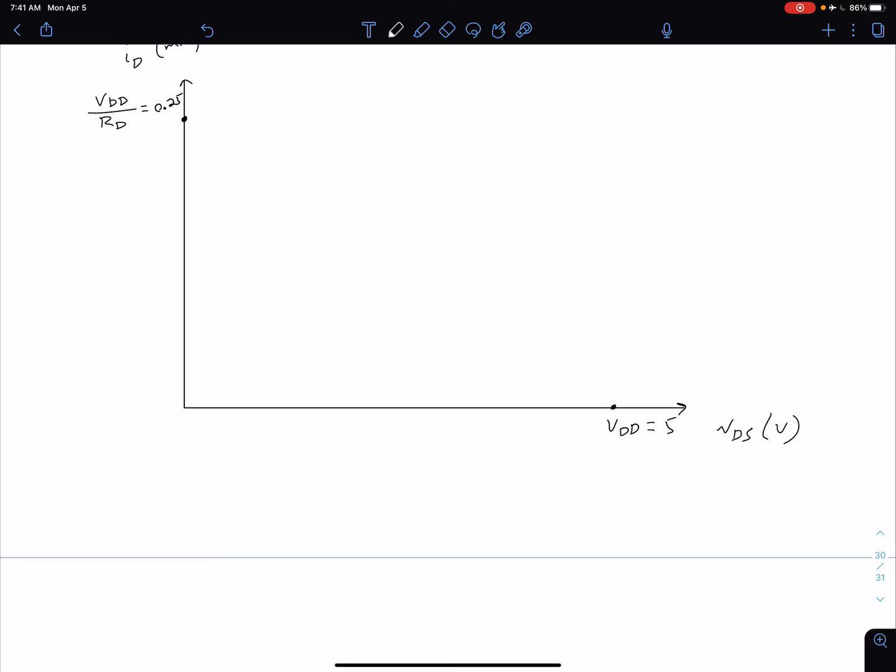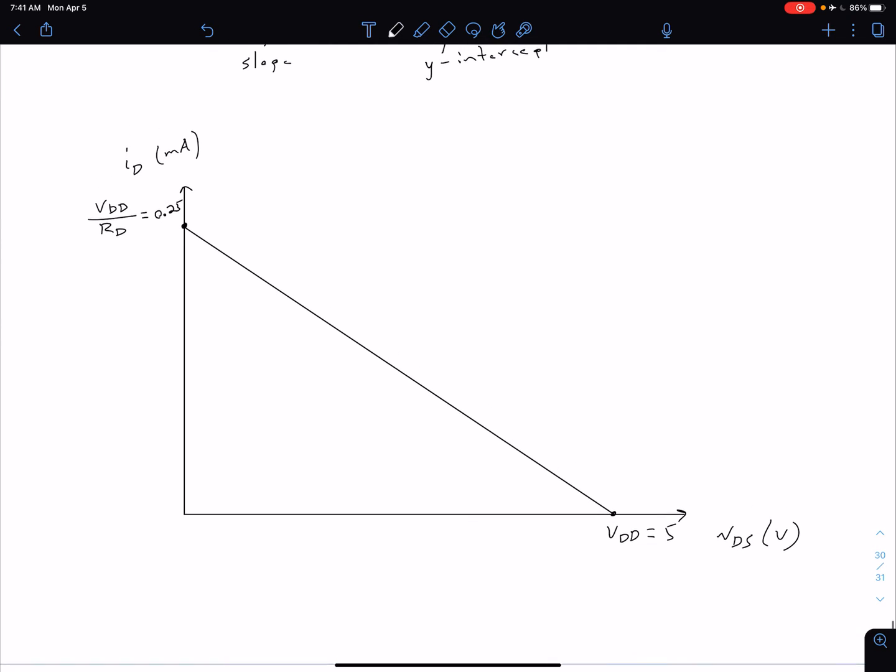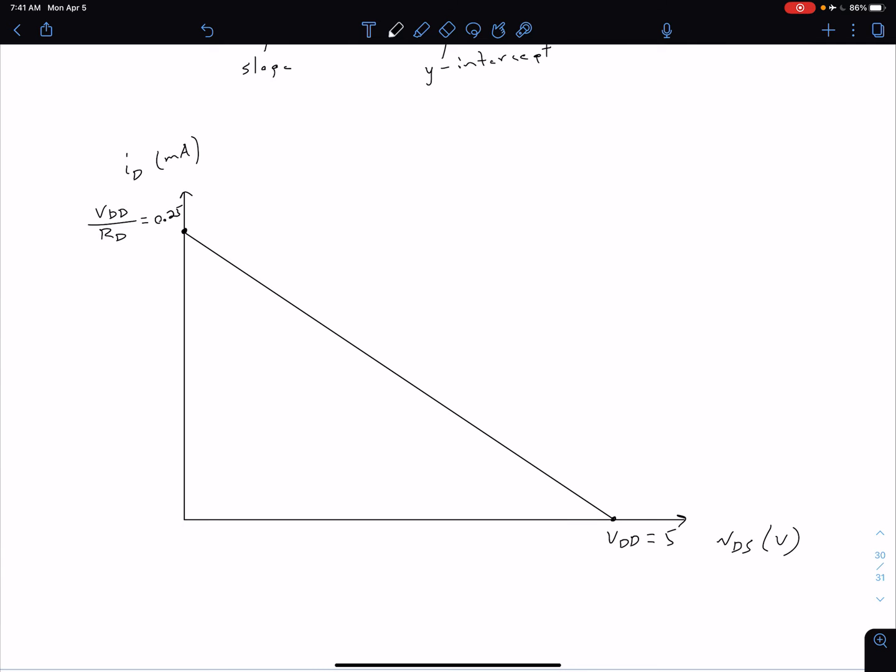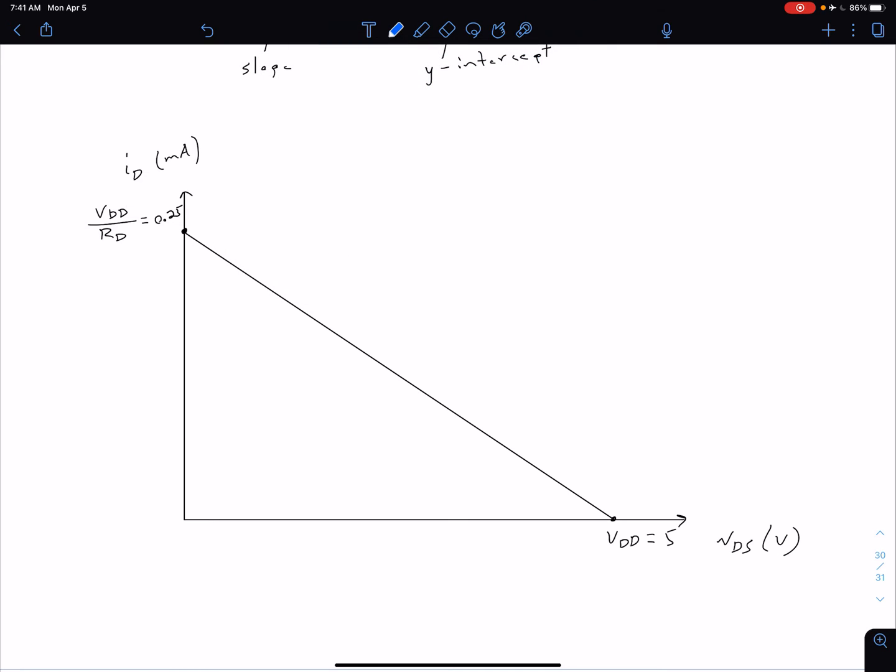Now we can draw our load line between those two. It's just going to be a linear relationship, so we get something that looks like this, and this would be our load line. We can sort of superimpose that on top of our family of IV curves. Let's go ahead and draw some in there.